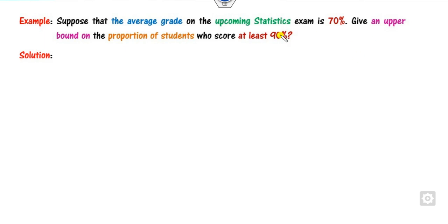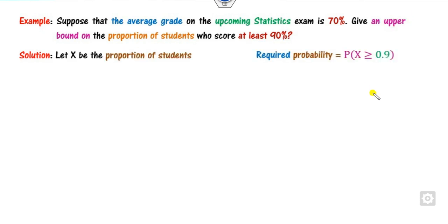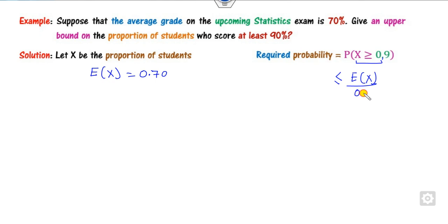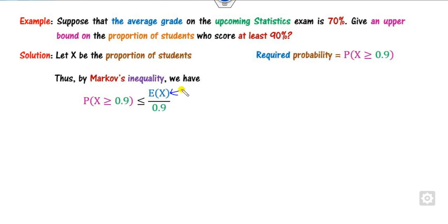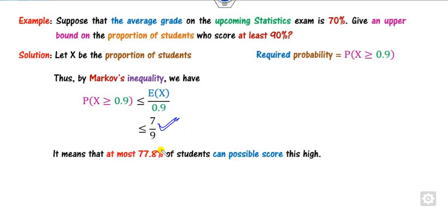In the next example, the average is given as 70%, so E[X] = 0.70. The required target is at least 90%. Since you need only an upper bound, apply Markov inequality. Let X be the proportion; the mean is 0.70. Applying P(X ≥ 0.90) ≤ E[X]/0.90 and substituting E[X] = 0.7 gives the answer as approximately 77.8%.